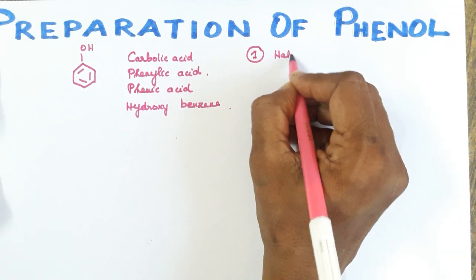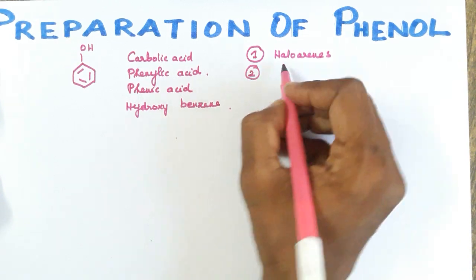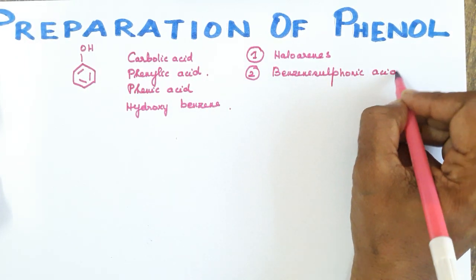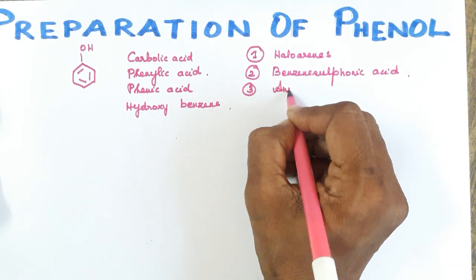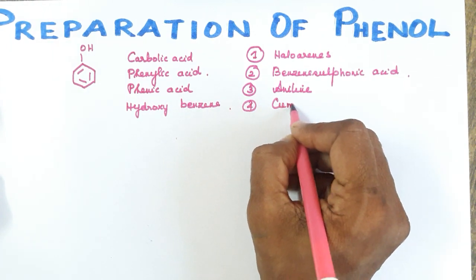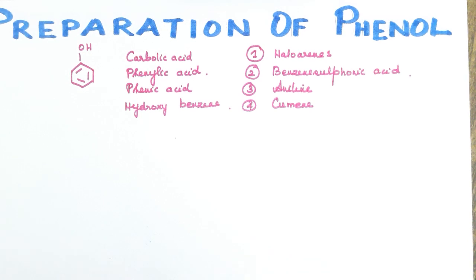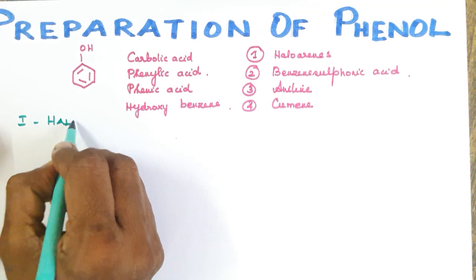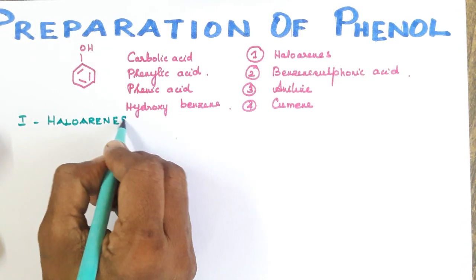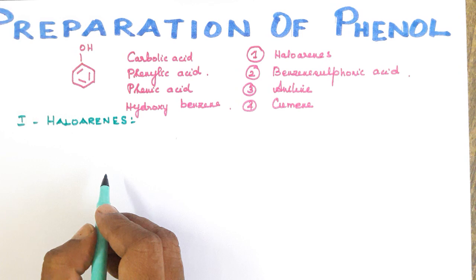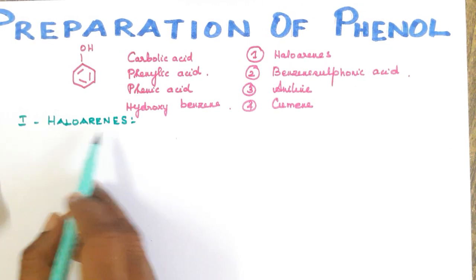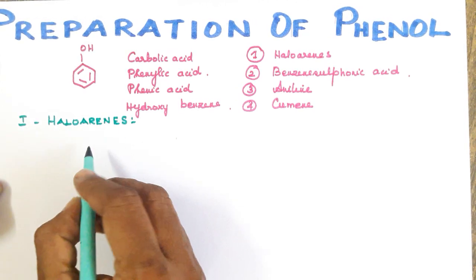The first method is from halo arenes. Halo arenes include chlorobenzene, bromobenzene, and other halogenated benzene compounds. These are the starting materials for the first method of phenol preparation.